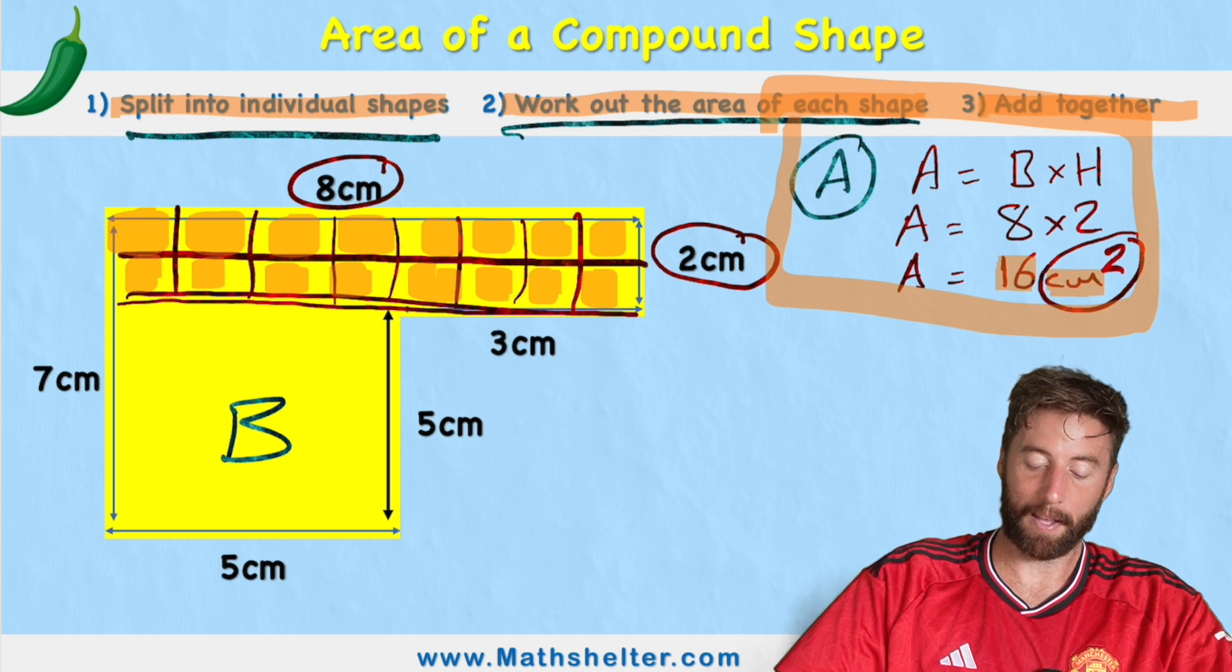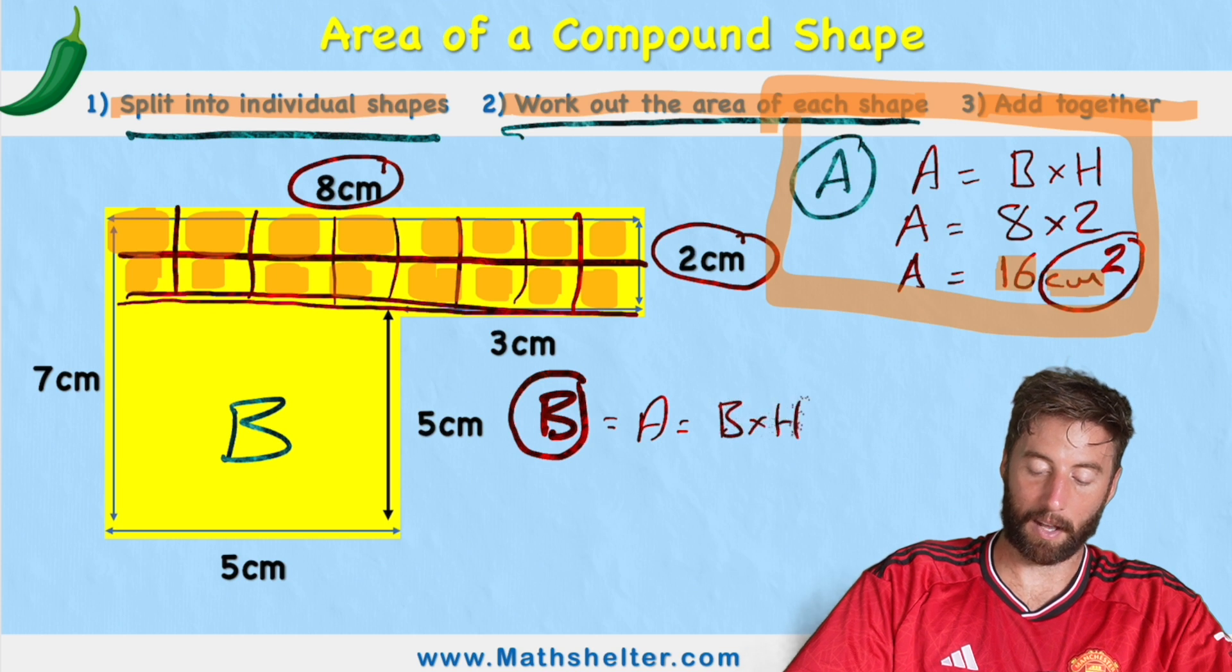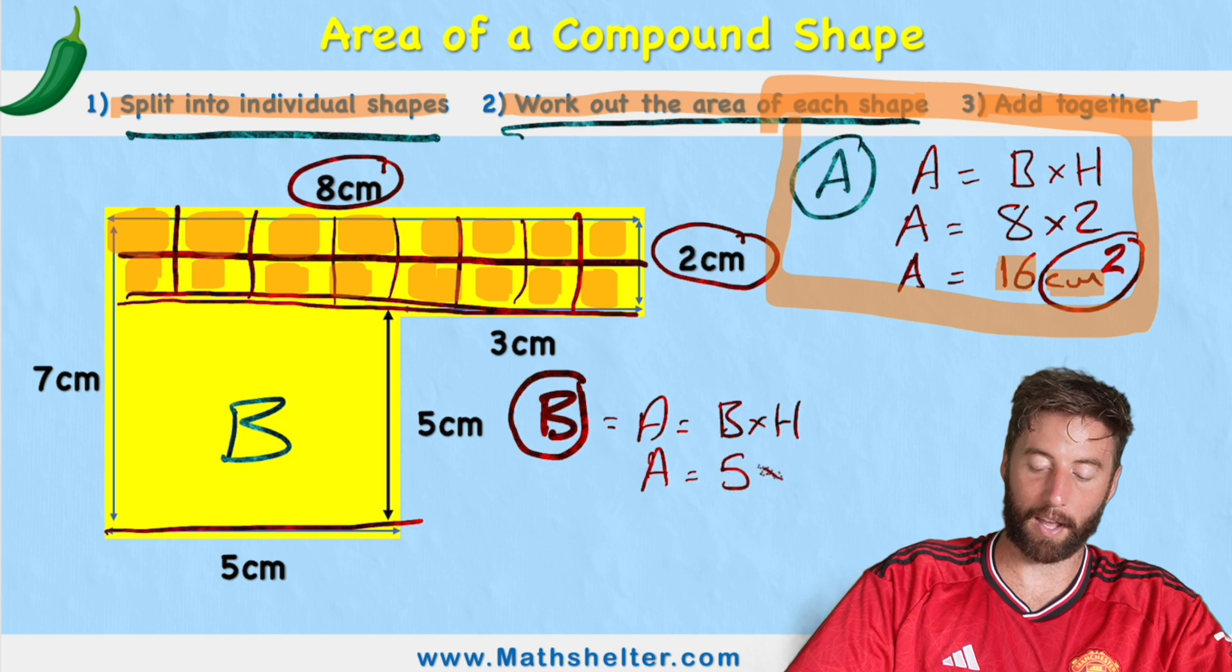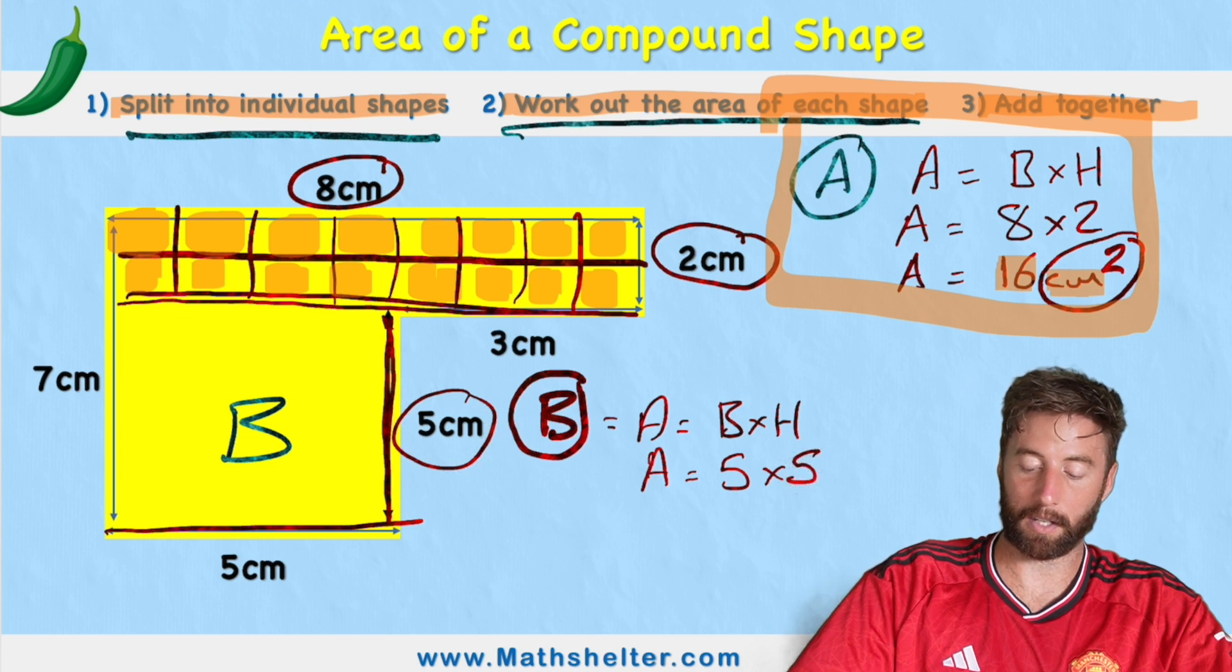Now let's do the same for shape B. Shape B is area equals base times height, and the base is 5 centimeters. So we have 5 times the height, which is this length here, which is also 5 centimeters. So my area equals 25 centimeters squared.